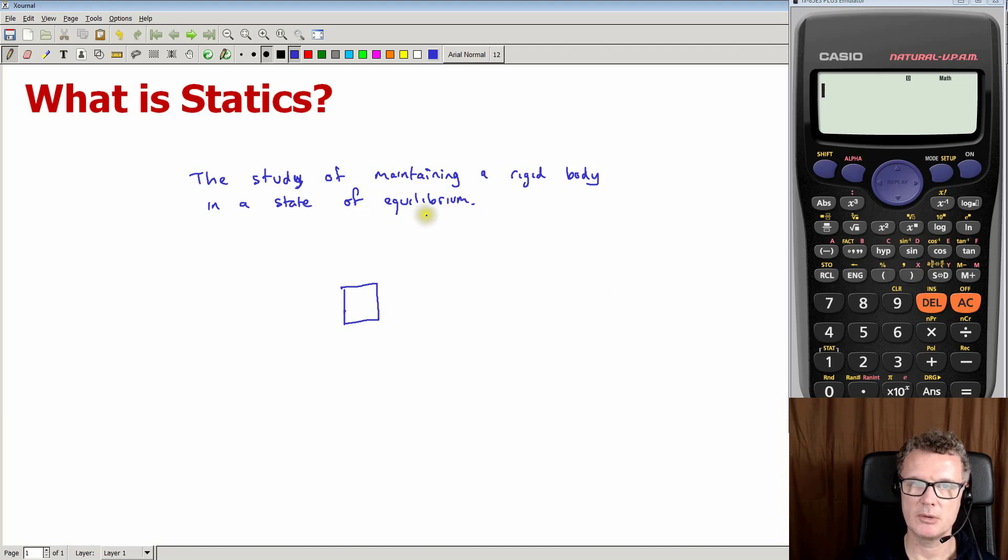State of equilibrium means that if I'm applying any forces to this body, when I sum up those two forces, that equals zero. So that's state of equilibrium in a translational sense.